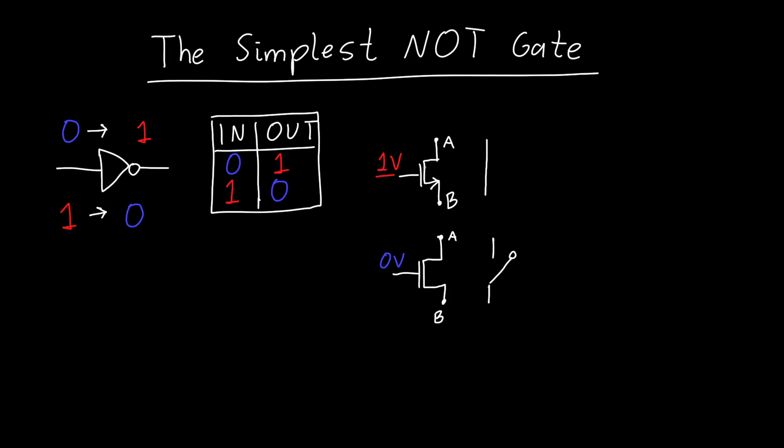And so we can use this, just a single transistor, to start making our NOT gate. So when we feed this transistor, if we connect it to ground, when we give it an input of one volt, the output will be connected to ground or zero volts. And that's exactly what we wanted from our NOT gate.